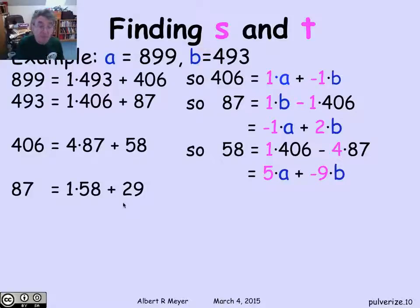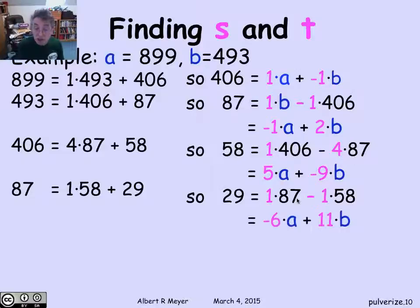Next, I find the remainder of 87 divided by 58. The quotient's 1, the remainder is 29. That means 29 is 1 times 87 minus 1 times 58. Looking back, I can combine those expressions to wind up with 29 is minus 6 times a plus 11 times b.